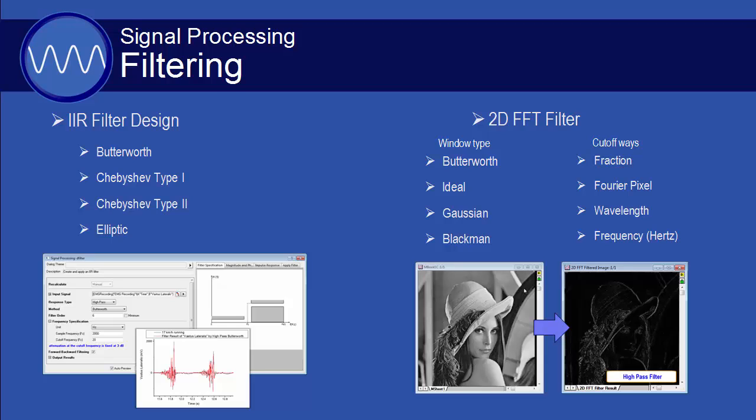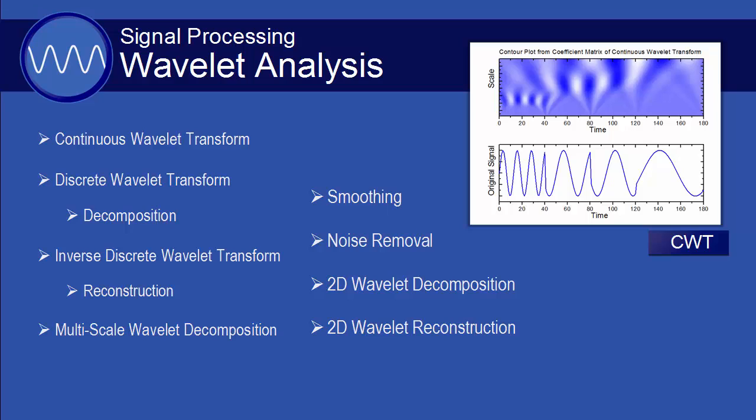Origin Pro offers several tools for wavelet analysis, including options for smoothing, noise removal, and wavelet decomposition and reconstruction.